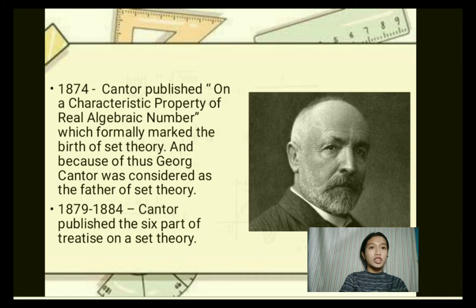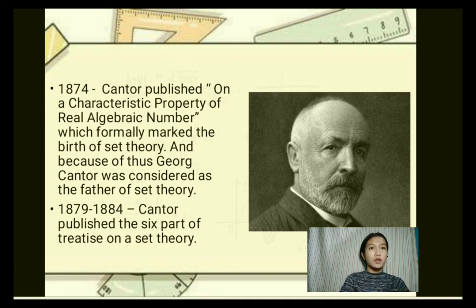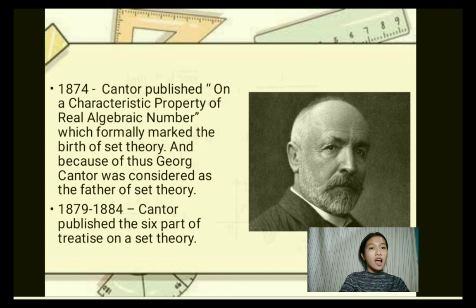Cantor formulated the real numbers as sequences of rational numbers. There was a motivational drive to understand the notion of infinity. He brought the concept of proving two sets to be equivalent if there is a one-to-one correspondence, which is a very powerful concept even today. Using these ideas, Cantor also proved that there are infinitely many levels of infinities, or infinitely many infinite cardinal numbers. Between 1879 and 1884, Cantor published the sixth part of his treatise on set theory. This work appeared in Mathematische Annalen, and it was a brave move by the editor to publish the work despite the growing opposition to Cantor's ideas.